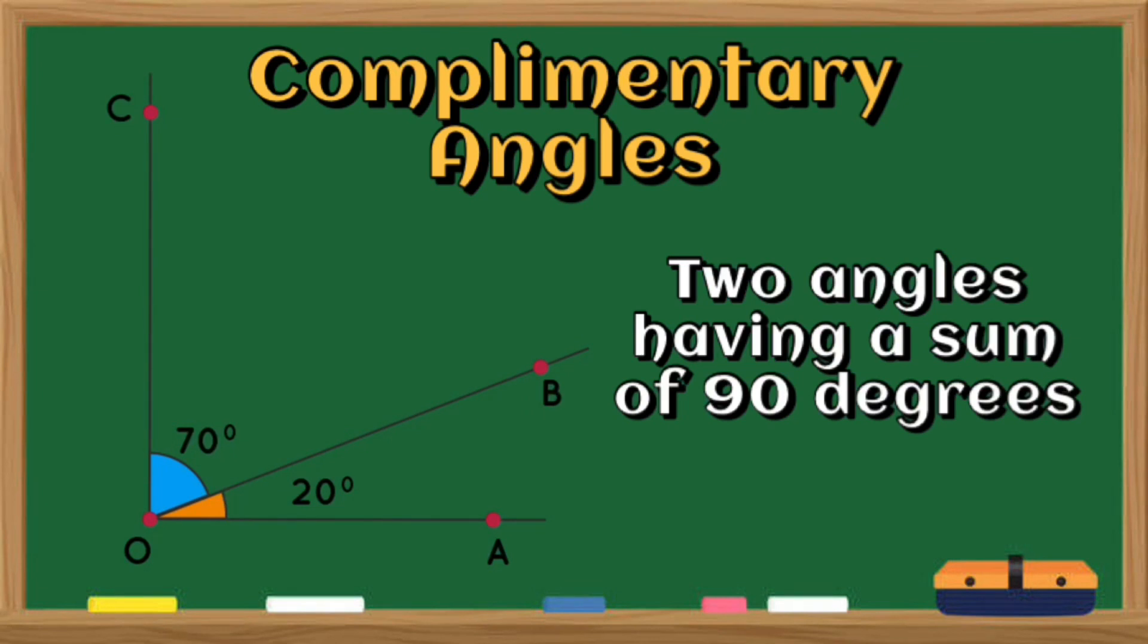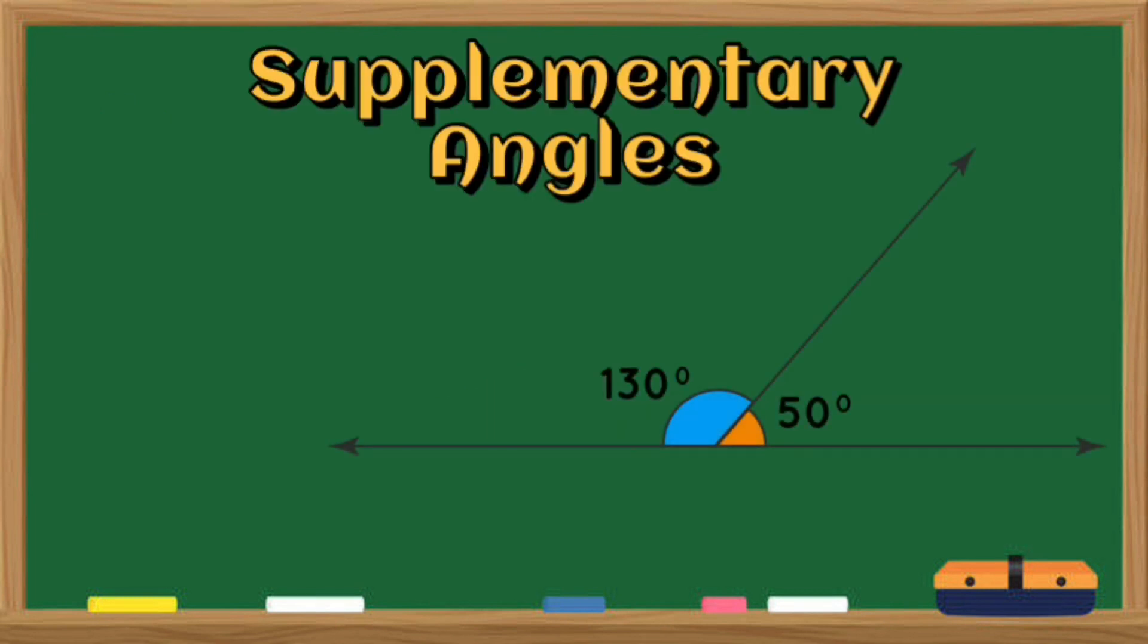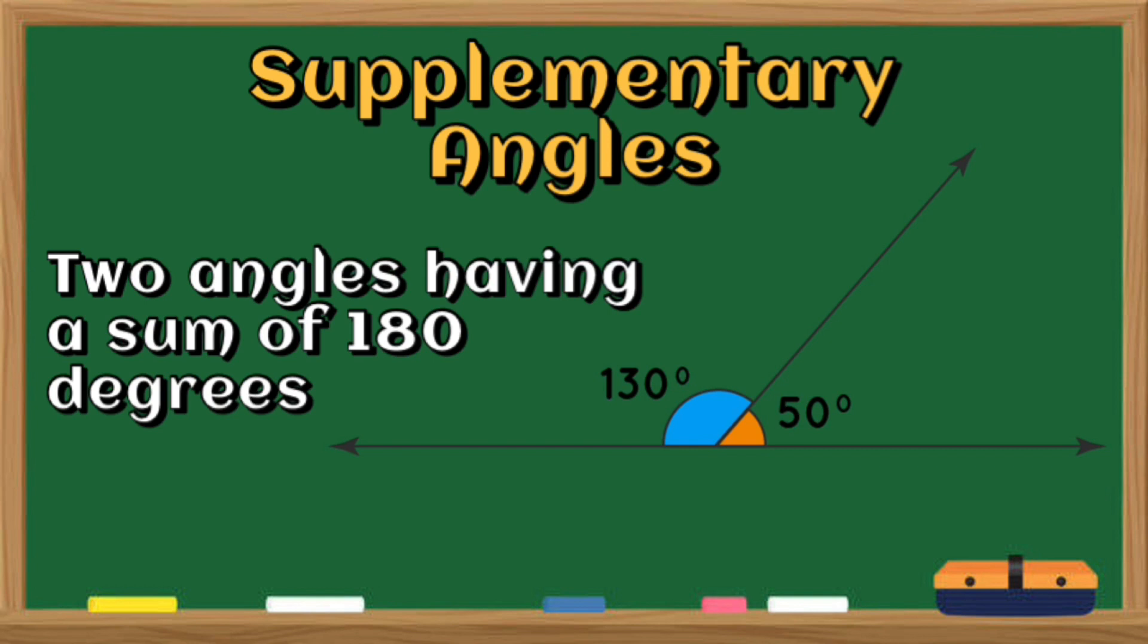When two angles having a sum of 90 degrees, we call it as complementary angles. While two angles forming a straight line or two angles having a sum of 180 degrees, we call it as supplementary angles.